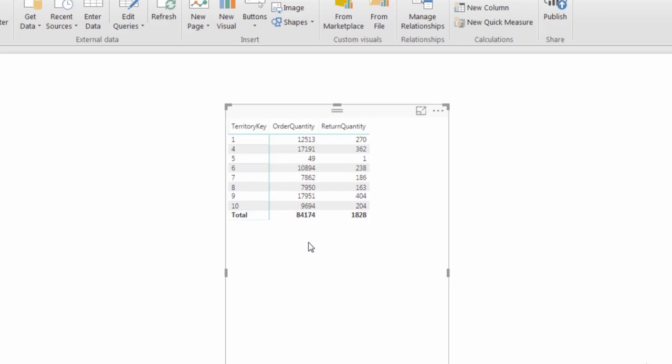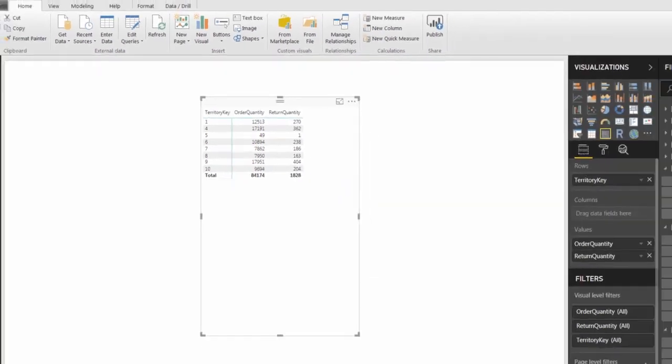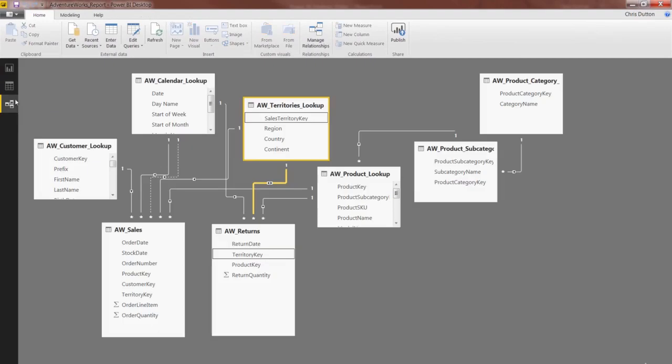And to the untrained eye, the initial reaction is to flash a thumbs up and say, OK, we're good to go. You know, we've got order quantities broken down by territories. We've got returns by territories. But again, remember the problem here is that we are missing data. There are actual valid order quantity values for territories two and three that aren't showing up because by using territory key from the returns table, we've filtered them out from step one.